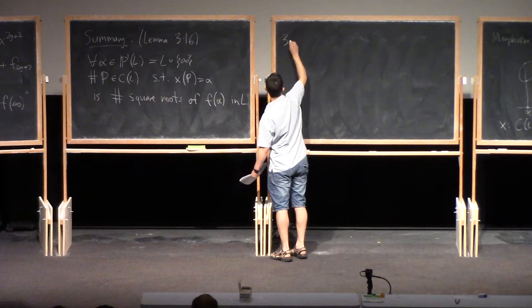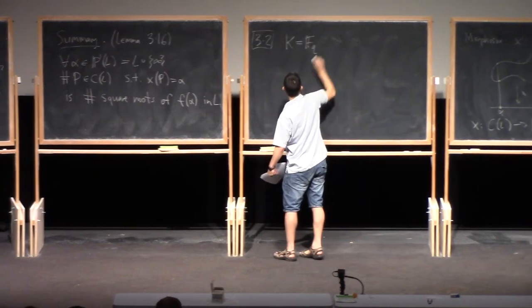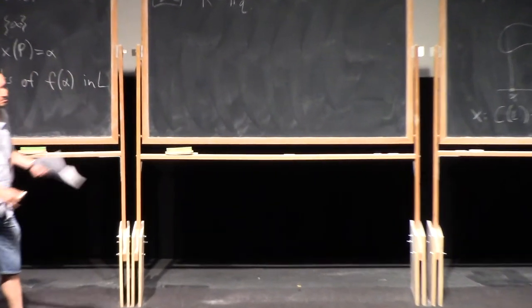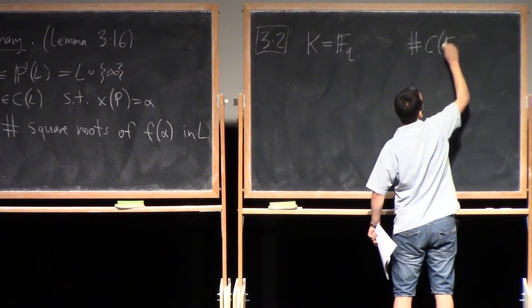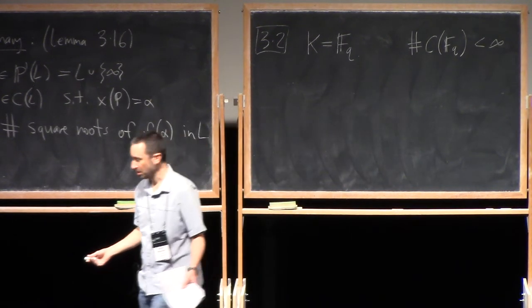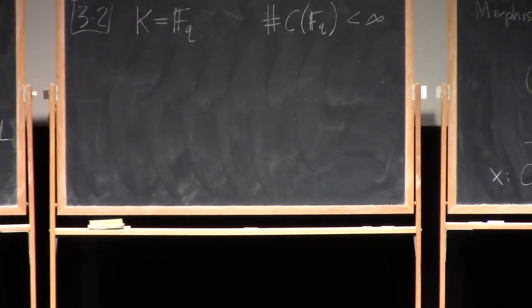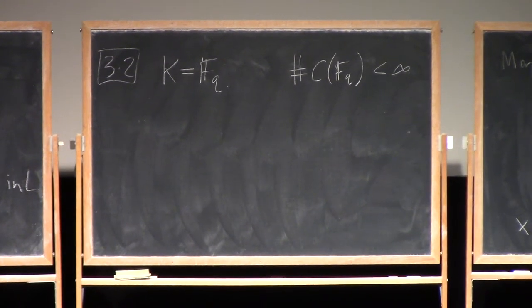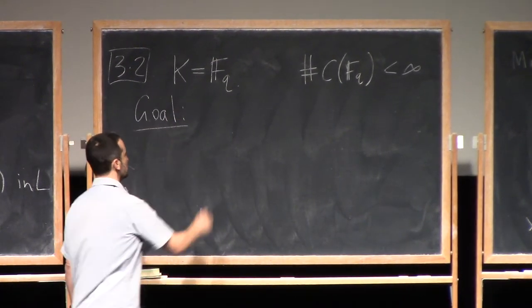So this is now section 3.2. So now I'm going to assume that K is a finite field. K is now going to be F_q. And we're going to talk about how many points there are on the curve. So the first thing, very obvious, is that the number of points is finite. There are, at most, q plus one possible values of x. And for each of them, there's at most two values of, at most two points on the curve.